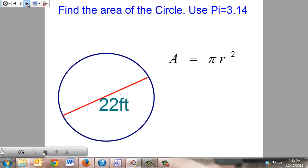Here we have a circle with a diameter of 22 feet. The problem is asking us to find the area. The area equals pi times radius squared, therefore the first thing we need to do is cut this diameter in half to find the radius.